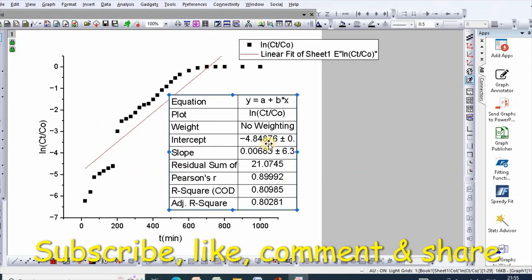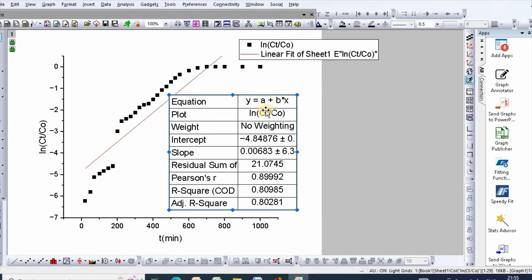So here is your intercept and slope. From these two, we can easily calculate k and N0. This is how we can easily fit linear Adams-Bohart model using Origin Pro.